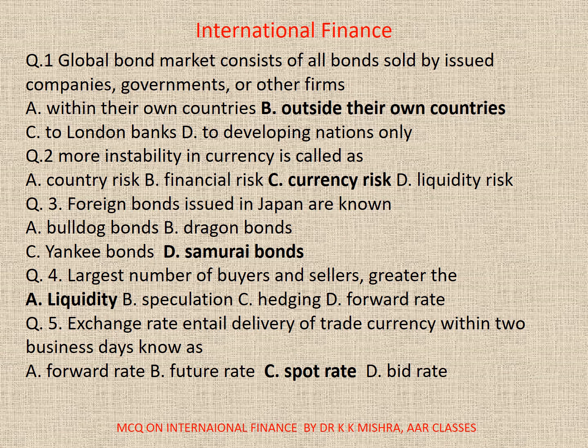Question number one. Global bond market consists of all bonds sold by issued companies, governments or other firms. Options are: A. Within their own countries. B. Outside their own countries. C. To London banks. D. To developing nations only. The correct option is B. Outside their own countries.